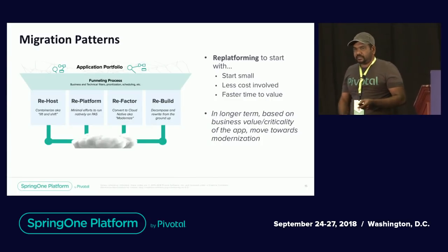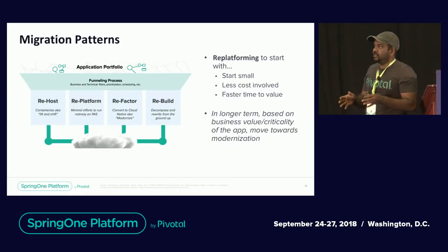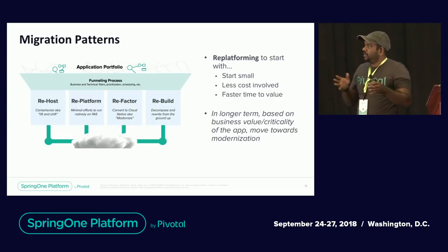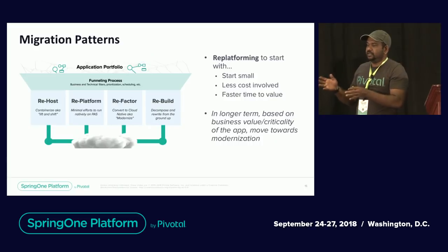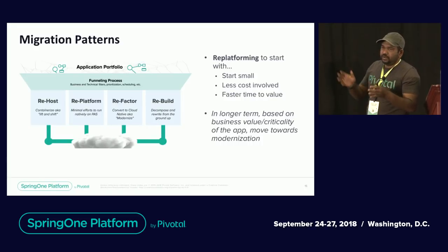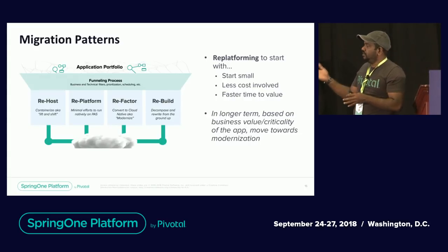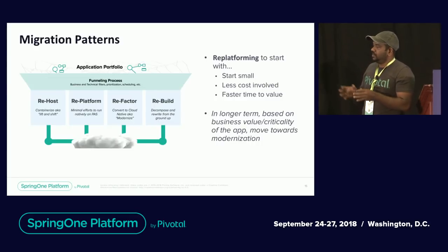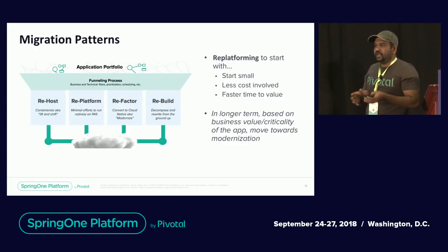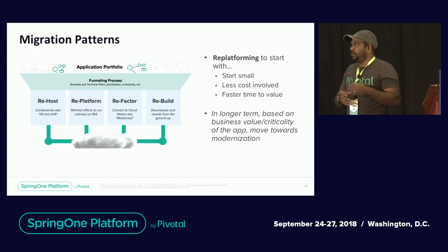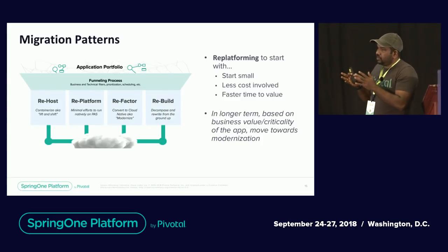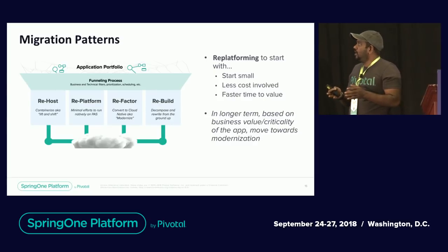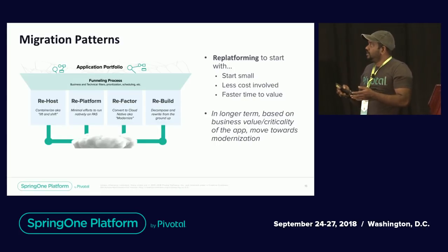Migration patterns: when migrating applications from your portfolio to cloud, we classify them into four types. We focus on re-platform, which means making minimal changes to your application to run it in cloud. Re-host means containerizing and moving to PKS. Refactor means modernizing to adapt more cloud-native principles. Re-build means starting from scratch — ground-up development, for cases like a thick client or Windows app. We focus on re-platforming because it's starting small, spending less money to get your application to cloud — faster time to value.